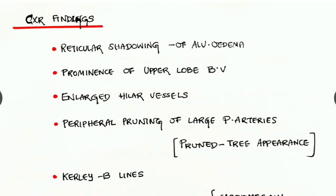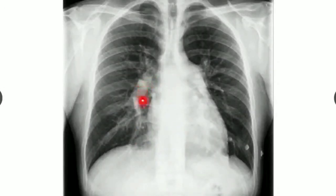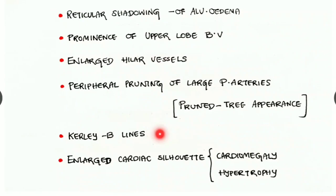Chest X-ray findings of heart failure include: reticular shadowing of alveolar edema, prominence of upper lobe blood vessels, enlarged hilar vessels due to pulmonary hypertension, peripheral pruning of large pulmonary arteries giving a pruned tree appearance — where proximal pulmonary vessels are dilated and distal parts are thinned. There can also be Kerley B lines due to pulmonary edema, and enlarged cardiac silhouette due to cardiomegaly.